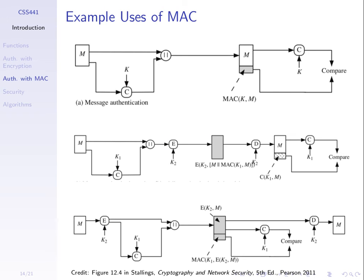Going back to the two schemes: the top scheme is the basic MAC approach we've discussed — if the attacker modifies the message or tries to masquerade as someone else, it would be detected if our MAC properties hold. Note that the top scheme doesn't provide confidentiality — it's only for authentication. The attacker can still see the message sent in the clear. Sometimes that's acceptable: you may want to send a message and ensure it's not modified, without caring if others see it.